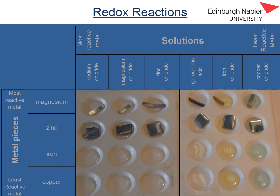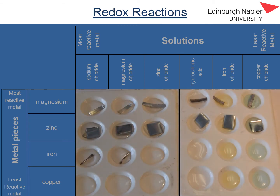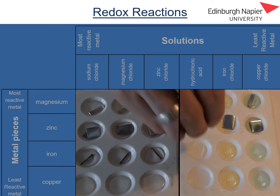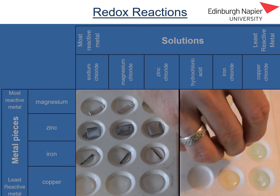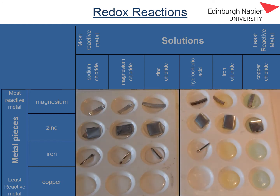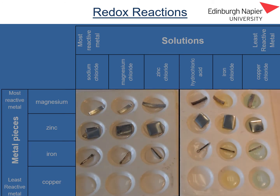In the next row I'm going to add some pieces of iron. I'm adding iron to the sodium chloride solution, to the magnesium chloride solution, to the zinc chloride solution, to the hydrochloric acid solution, to the iron chloride solution, and to the copper chloride solution.